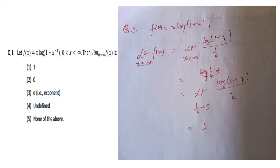Question number one: f(x) = x · log(1 + x)^(−1). We have to find out the limit as x tends to infinity of f(x). The variable here is x. This is a very simple question from the limits chapter in mathematics.